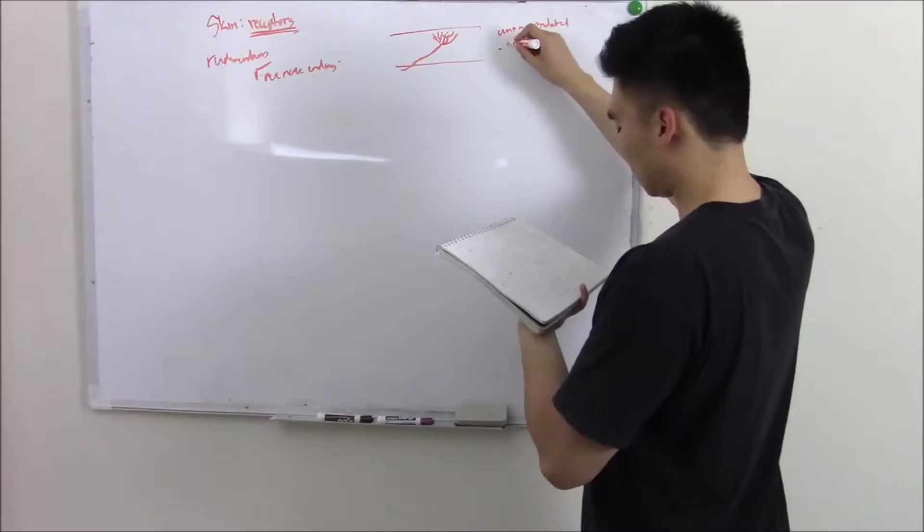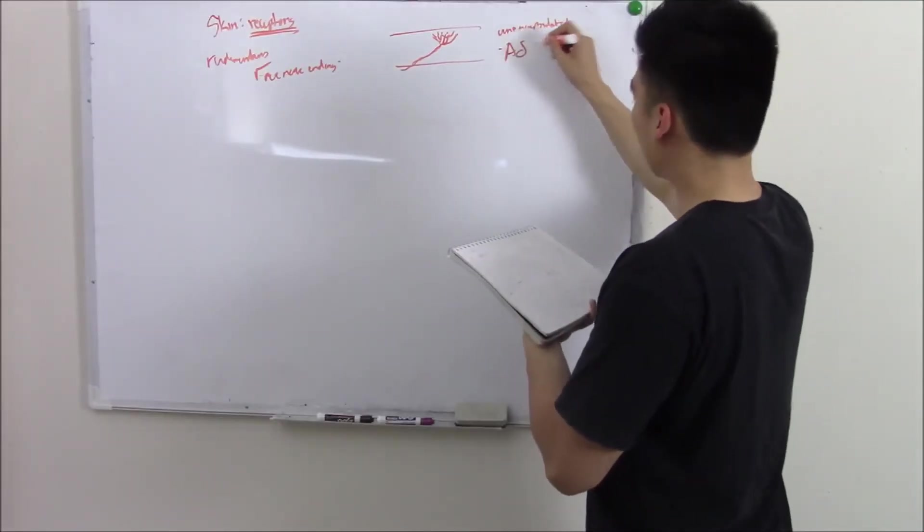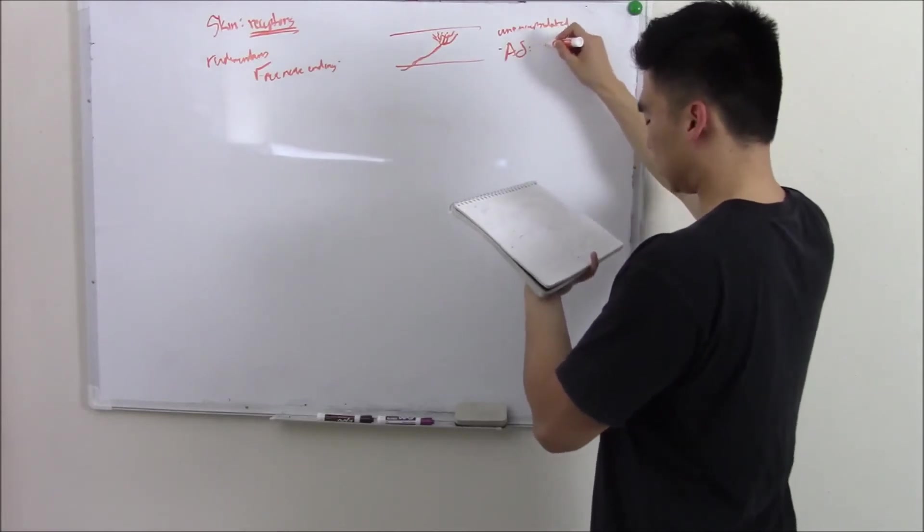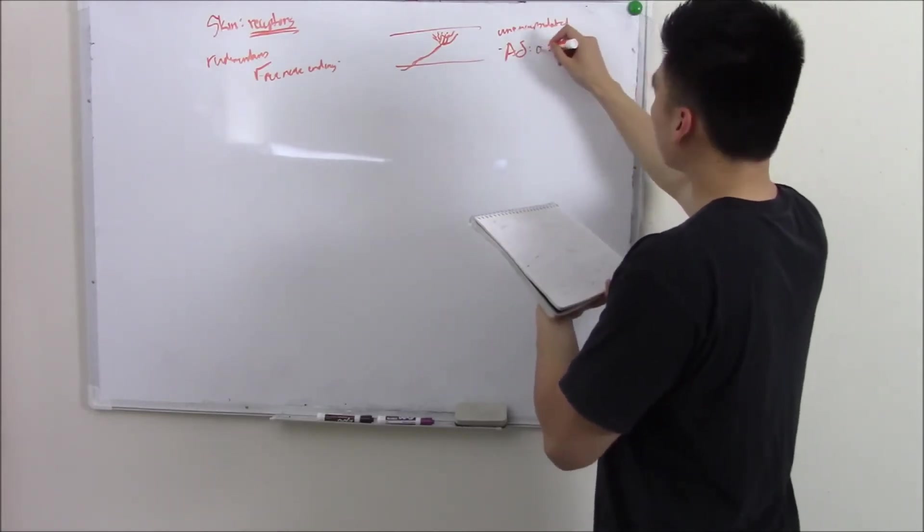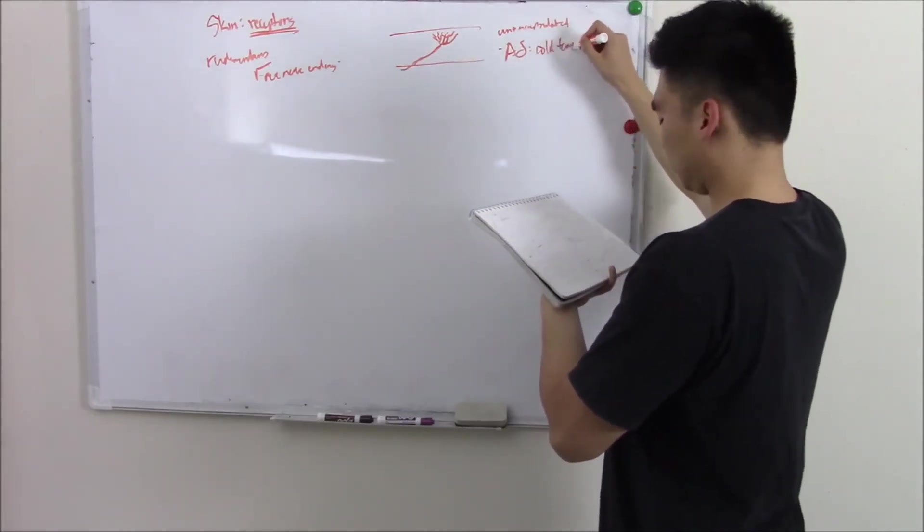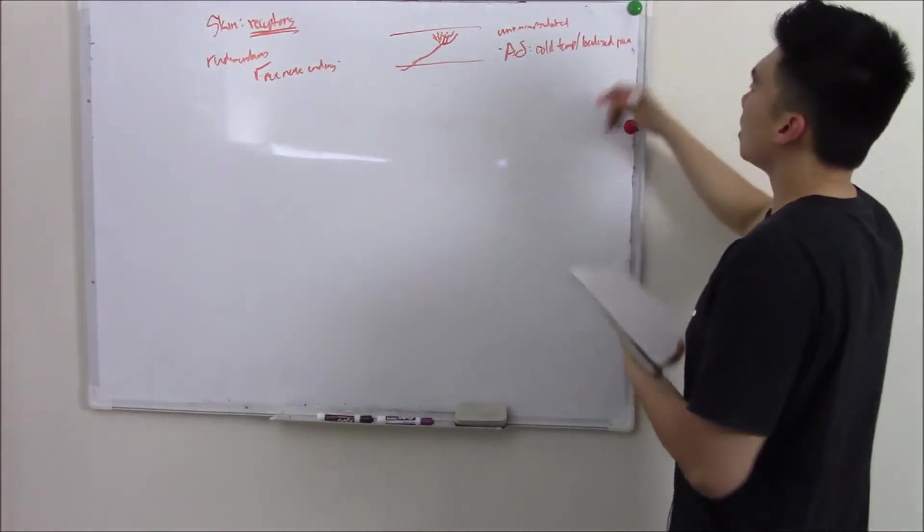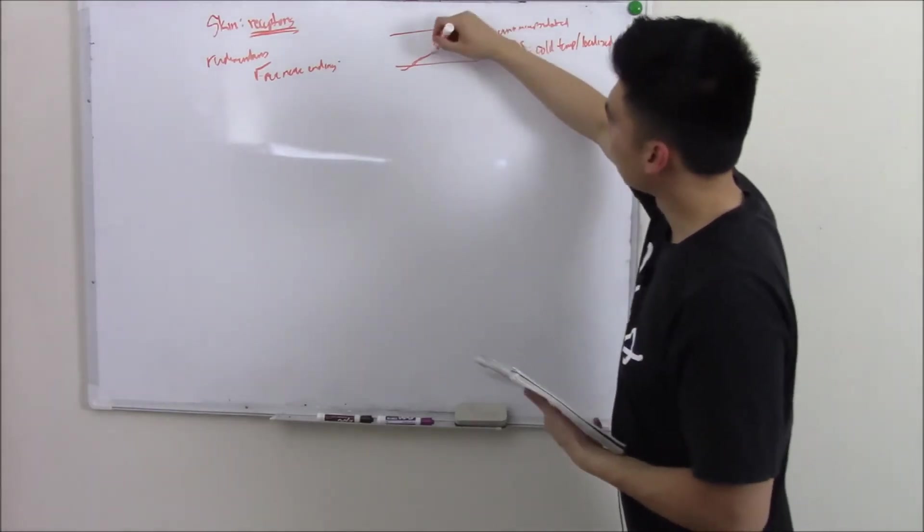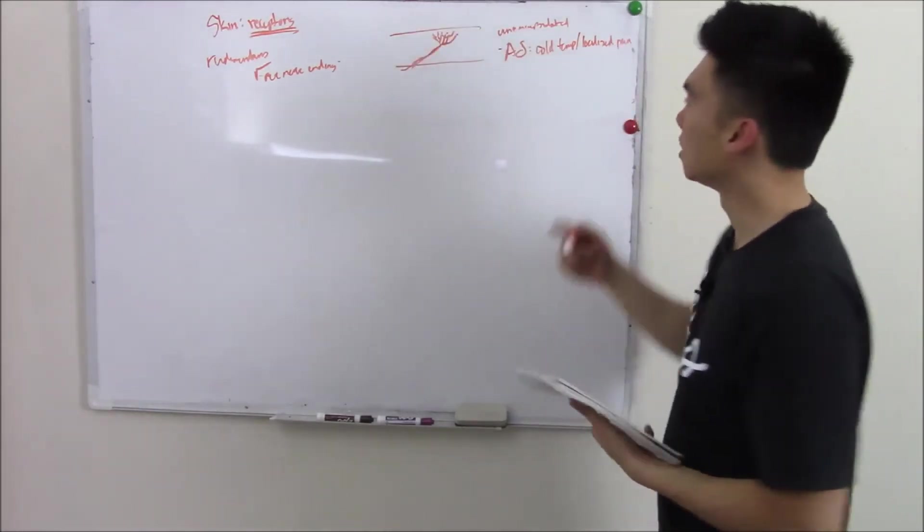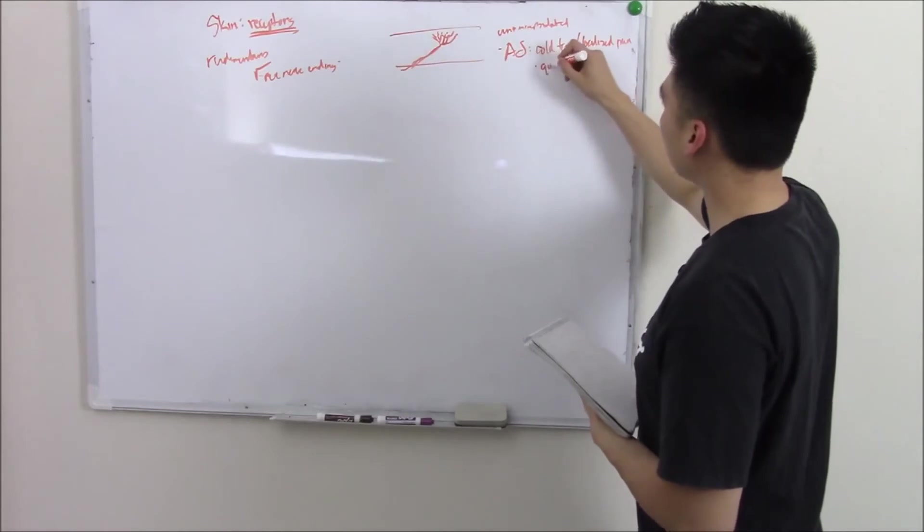These are your free nerve endings. And there are a couple different varieties. For example, your alpha-delta variety will sense things like cold temp and localized sharp pain. And your alpha-delta is very thin and myelinated. That means you can send very quick signals.